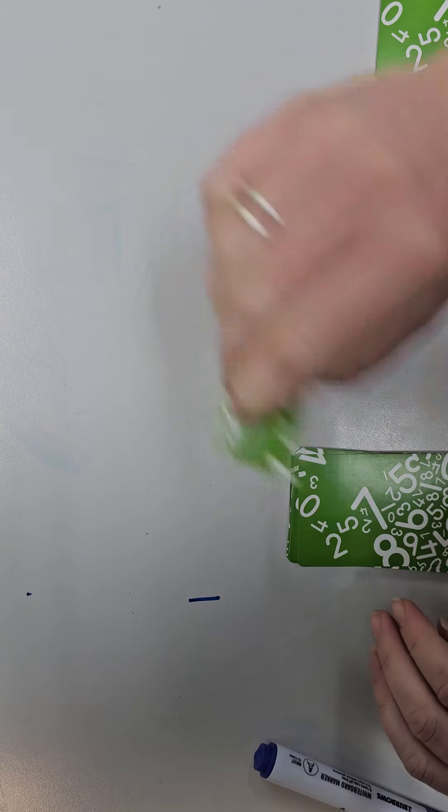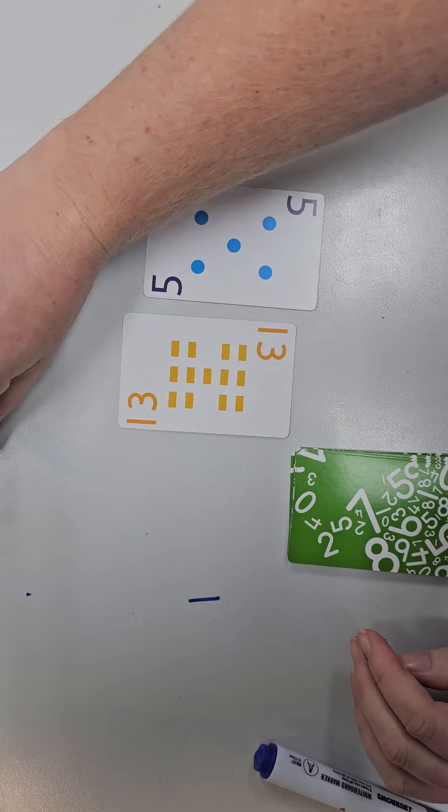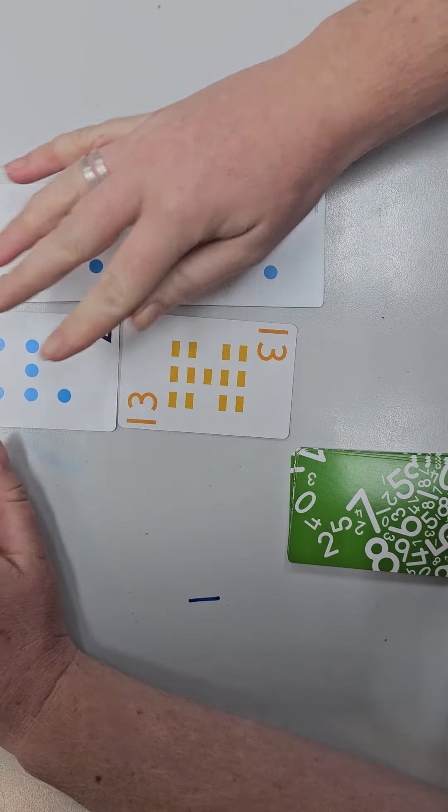Then we would go again. So this person's got thirteen and five. This person has got seven and eight.